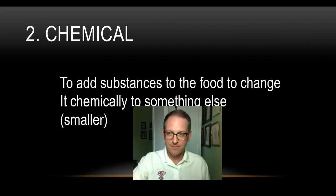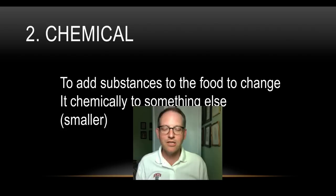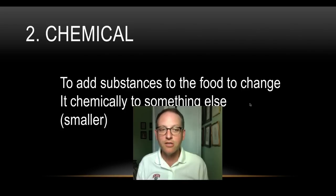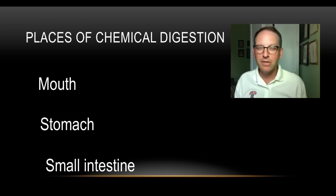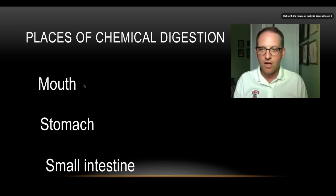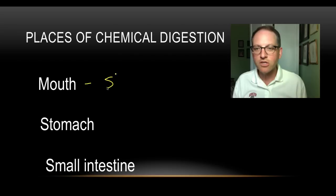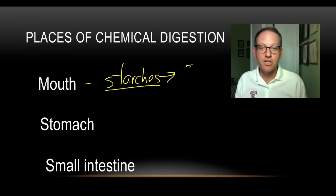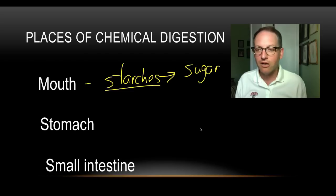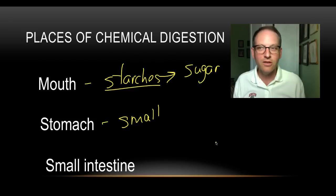Now let's move on to the next kind of digestion: chemical. That's where we add substances to the food parts to change it chemically to something else — we're not only making the pieces smaller, we're also changing them into something else. It starts in the mouth: you secrete something called ptyalin, which works on things like starches. If you ever take a saltine cracker, chew on it, and just leave it in your mouth, it'll actually get sweeter because it's changing that starch into a kind of sugar.